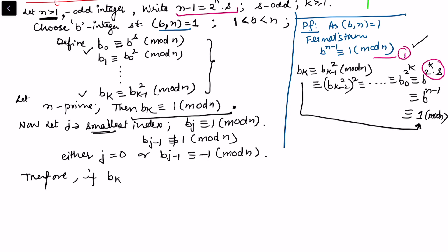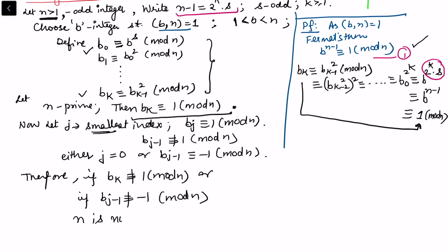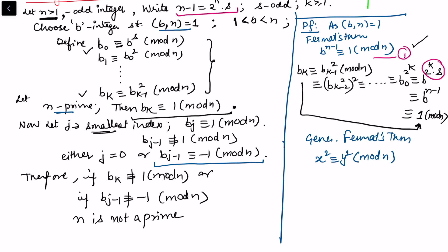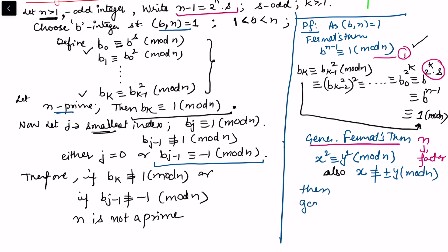If bₖ is not congruent to 1 mod n, or if bⱼ₋₁ is not congruent to -1 mod n, then we conclude that n is not prime. To understand why bⱼ₋₁ must be congruent to -1 when n is prime, we use the generalized Fermat theorem for factorization: if x² ≡ y² mod n and x is not congruent to ±y mod n, then GCD(x - y, n) gives a non-trivial factor of n.